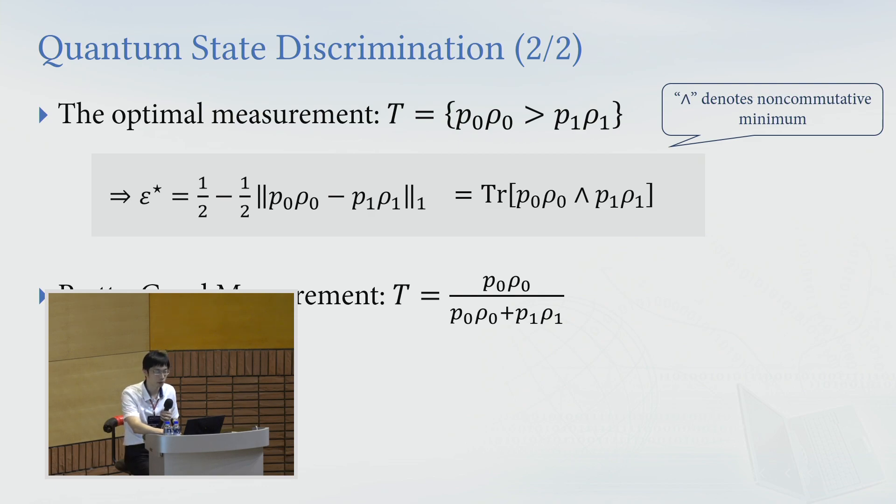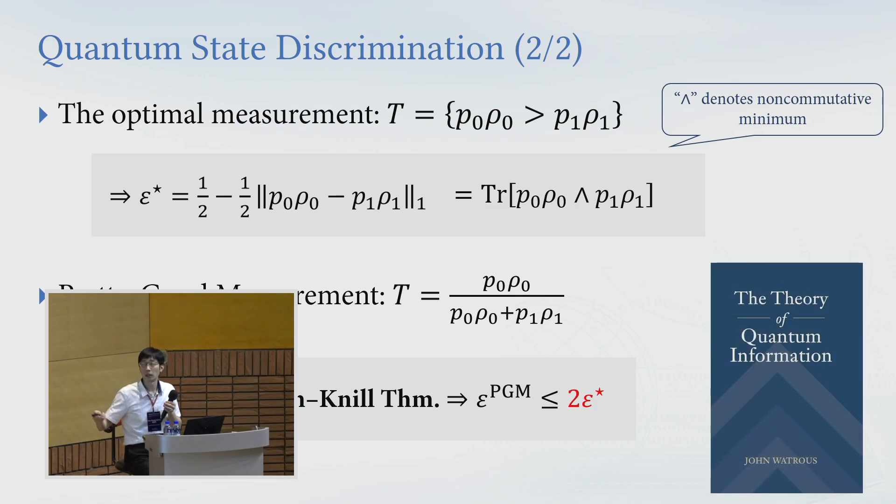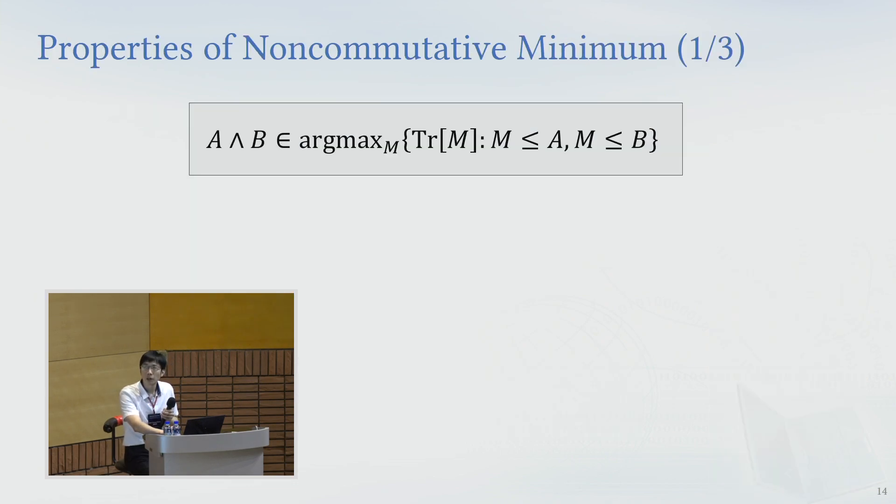It's also a valid quantum measurement. And Barnum and Knill's theory says that the error on the pretty good measurement is suboptimal, but it's still pretty good in a sense that it's no larger than twice the optimal error probability. And for proof, you can check John Watrous's book in chapter three. He used some nice Cauchy-Schwartz inequality to show this inequality, and it's known for 20 years.